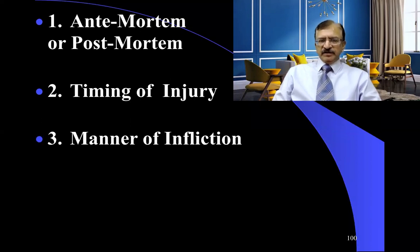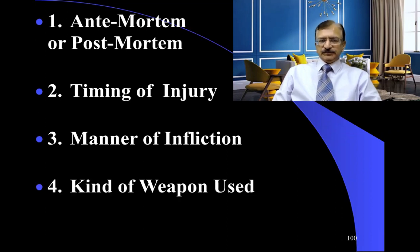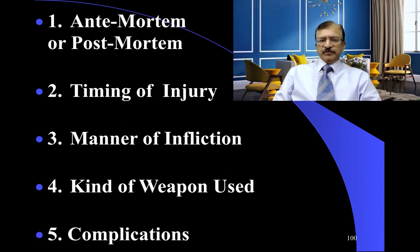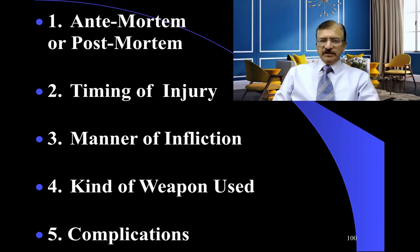The manner of infliction — that is, whether it is suicidal, homicidal, or accidental — and then the kind of weapon used. From keen observation of the injury and wound, we can find out the shape and nature of the weapon. We will also be discussing in this lecture the pathophysiological effects — the complications of the laceration.